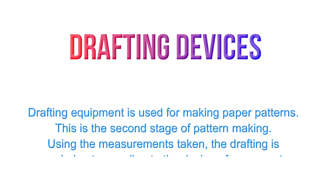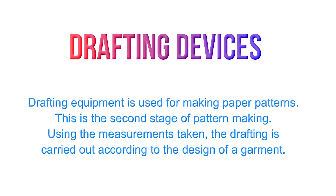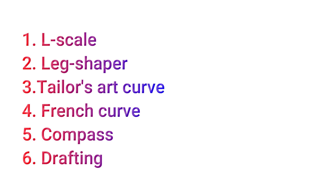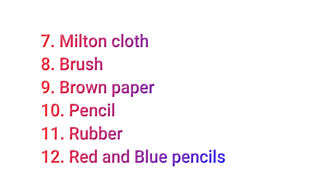Then we can talk about drafting devices. Drafting equipment is used for making paper patterns. This is the second stage of pattern making. Using the measurements taken, the drafting is carried out according to the design of a garment. In drafting devices, we have L scale, leg shaper, tailor's art curve, French curve, compass, drafting table, Milton cloth, brush, brown paper, pencil, rubber, and red and blue pencils.